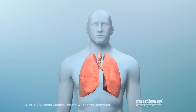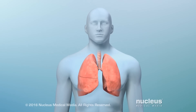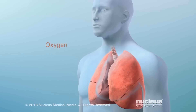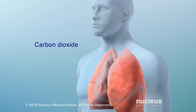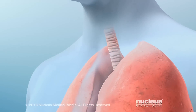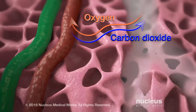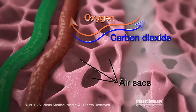Your lungs are a pair of organs inside your chest that allow you to breathe. You inhale oxygen, which all cells need. Then you exhale a waste gas called carbon dioxide. This gas exchange happens inside tiny air sacs in your lungs.